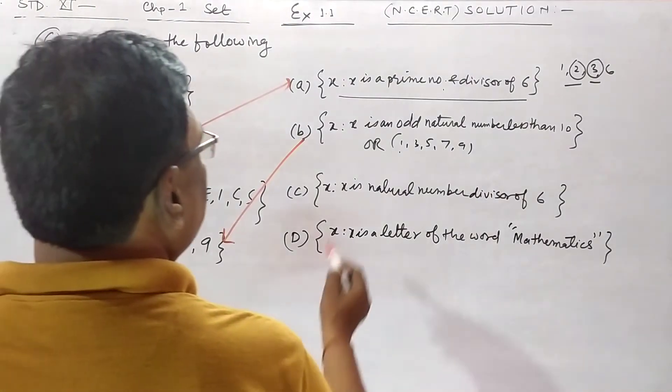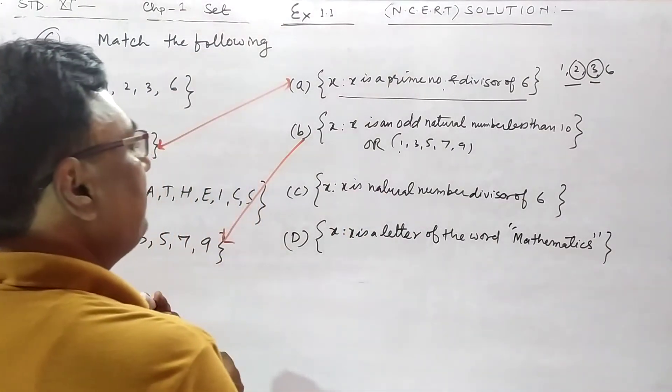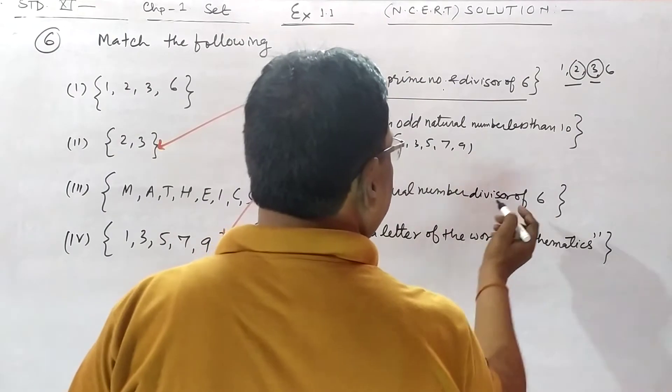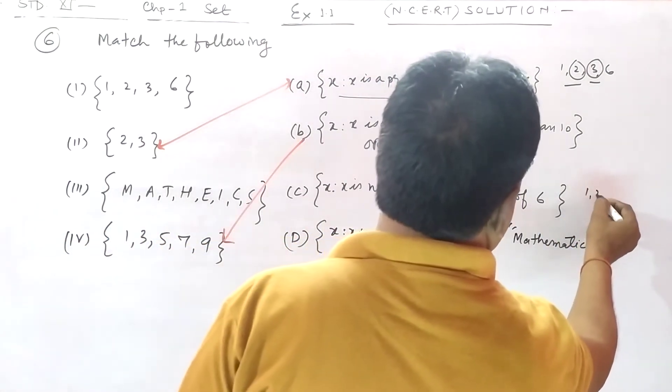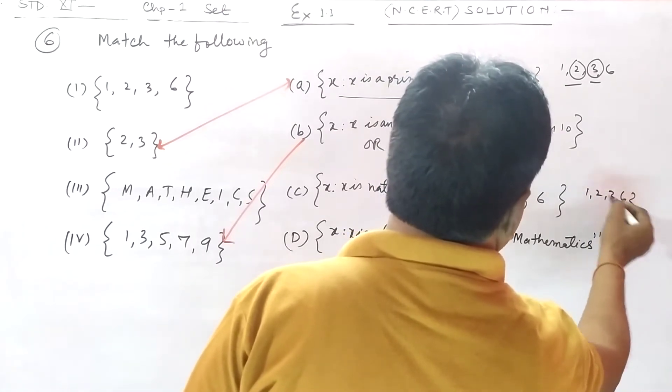And then x is natural number divisor of six. Natural number divisors of six are one, two, three, and six. So this is it.